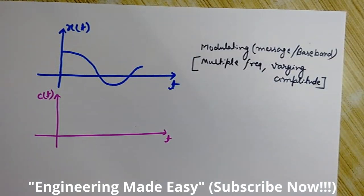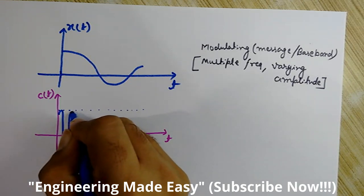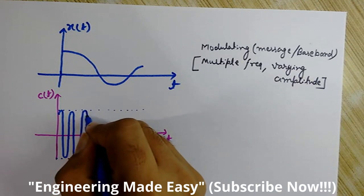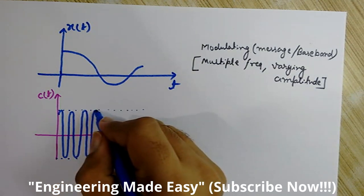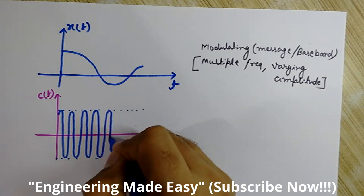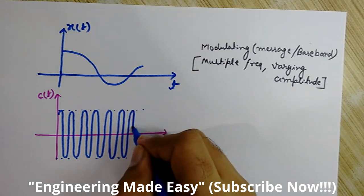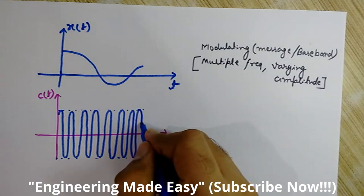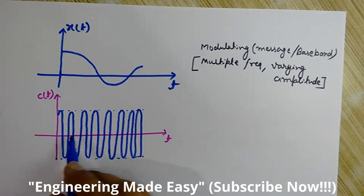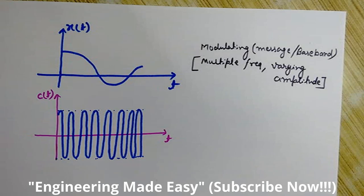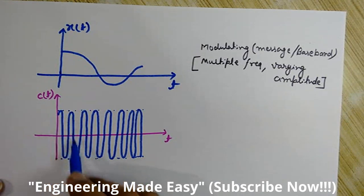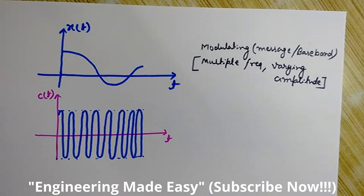Now we will see the graph of the carrier wave, represented by c(t). As we know, the carrier wave is a high frequency wave with constant amplitude. As you can see the amplitude is not changing — it is constant for this wave and it has high frequency. So this is the carrier signal having constant high frequency and constant amplitude.